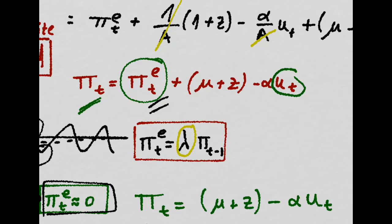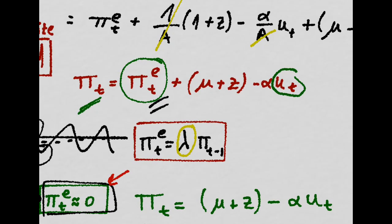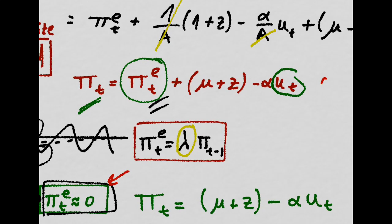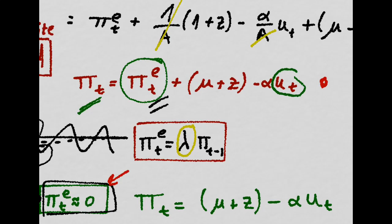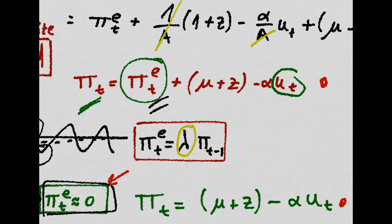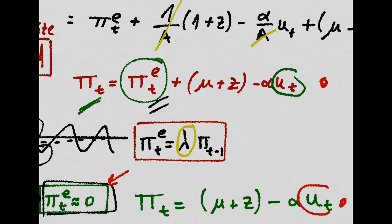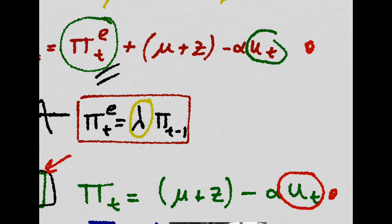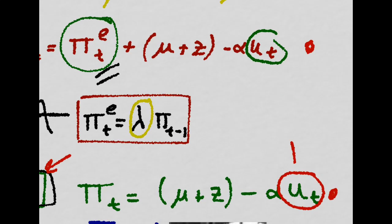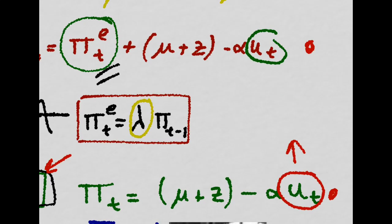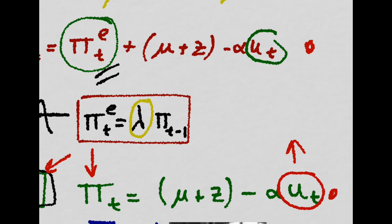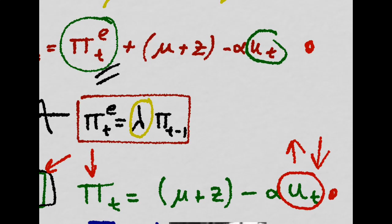The expected inflation being almost zero inflation rate could be written as this expression here, as a function of unemployment. This expression says that whenever you increase the unemployment, you decrease inflation, and whenever you decrease the unemployment, you increase inflation.